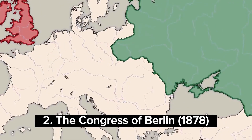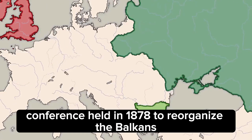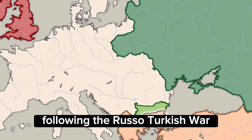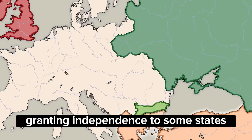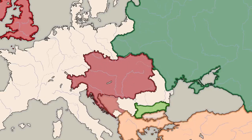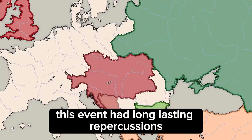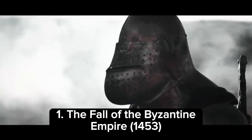The Congress of Berlin, 1878. The Congress of Berlin was a diplomatic conference held in 1878 to reorganize the Balkans following the Russo-Turkish War. The major European powers redrew the borders of the region, granting independence to some states and placing others under the influence of imperial powers. This event had long-lasting repercussions and sowed the seeds of future conflicts in the Balkans.